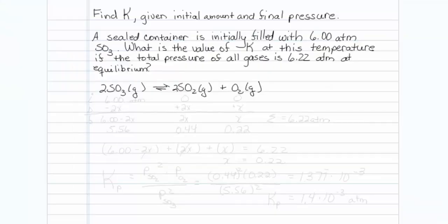This is how to find K given initial amount and final pressure. A sealed container is initially filled with 6.00 atmospheres sulfur trioxide. What is the value of K at this temperature if the total pressure of all gases is 6.22 atmospheres at equilibrium?